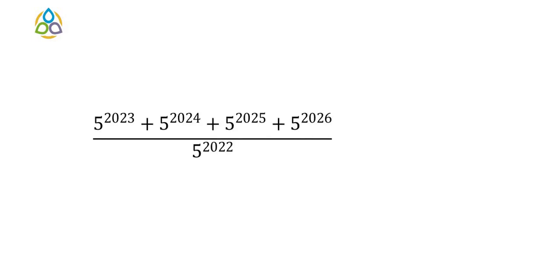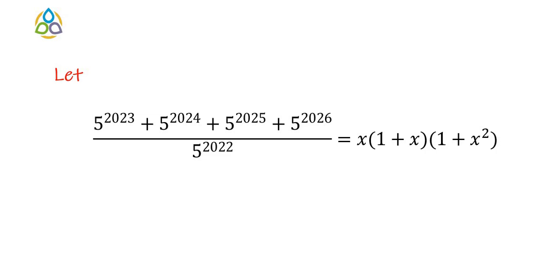Consider the expression 5 to the power 2023 plus 5 to the power 2024 plus 5 to the power 2025 plus 5 to the power 2026, whole divided by 5 to the power 2022. We are given that this expression is equal to x into 1 plus x into 1 plus x square.